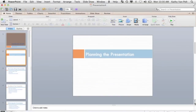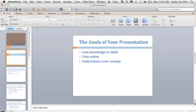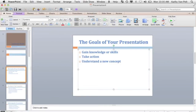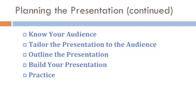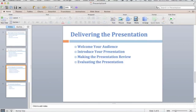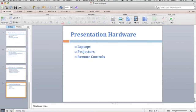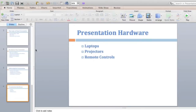Slide one is the title slide. This section slide lets the viewer know this is the 'Planning the Presentation' section. This is a title and content slide — here's the title, here's the content. And this is the 'Planning the Presentation continued' slide. You could make a new section for 'Delivering the Presentation' and another for 'Presentation Hardware' — it just depends on how you want to lay it out.